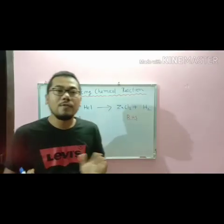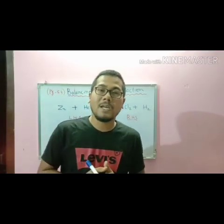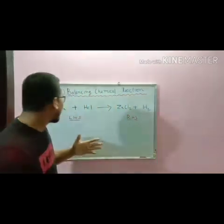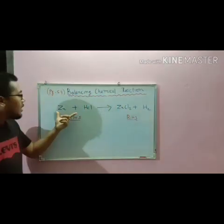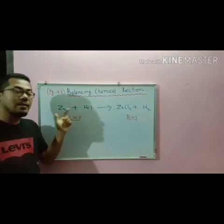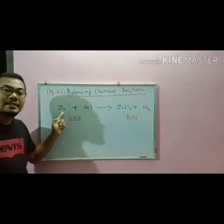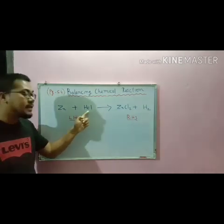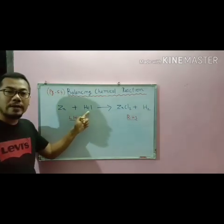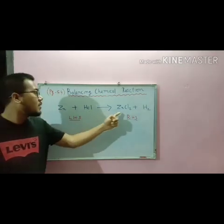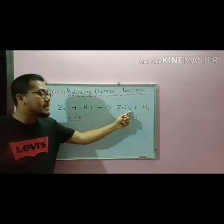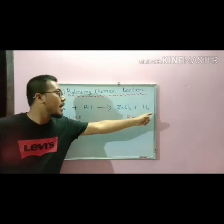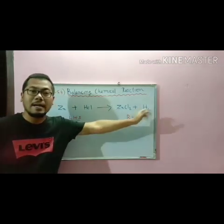Now we will learn another chemical equation. In this equation, Zn stands for zinc, HCl is hydrochloric acid, ZnCl₂ is zinc chloride, and H₂ is hydrogen.